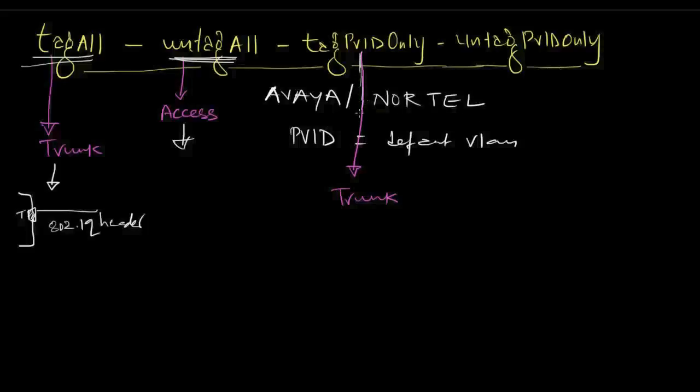Now this is where things are getting a bit Avaya oriented. Tag PVID only. What this means is, let's say this port, maybe again I'll say 1/1. When you tick this box and say this port is set for tag PVID only with VLAN 100, and here you allow VLAN 100, 200, or 300. What happens here is when the frame exits the interface, it will remove this header for VLAN 200 and 300.